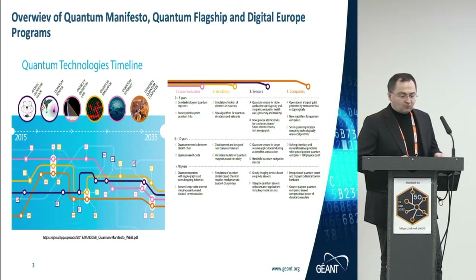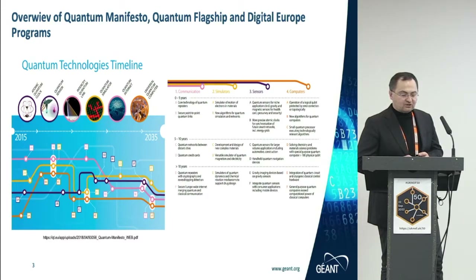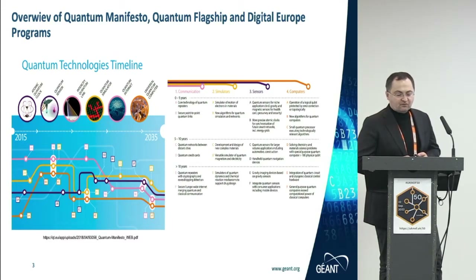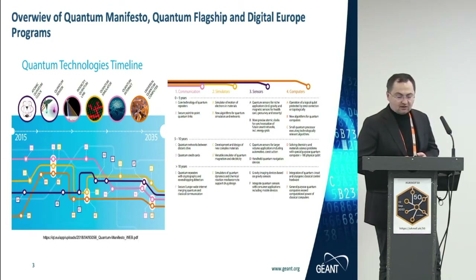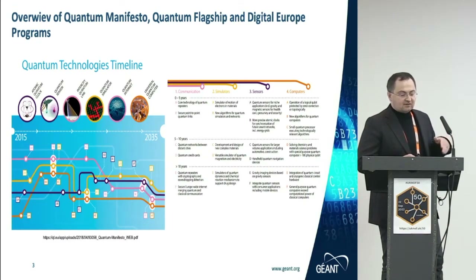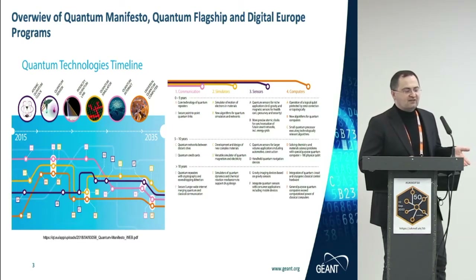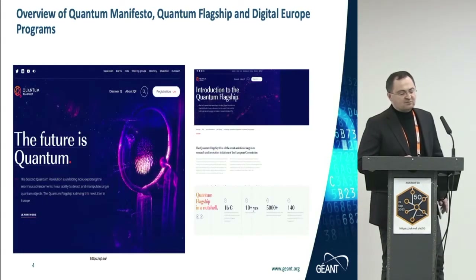The current program started in 2016 when the European Commission published the Quantum Manifesto, which outlined the basics for the development of these technologies in the European Union. These are divided into four sections: communication, quantum sensing, quantum simulation, and quantum computing. What is important is that they are interconnected — advancements in one area drive advancement in the others.